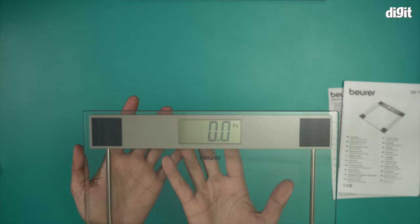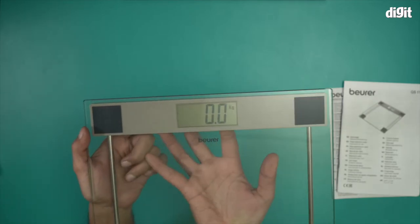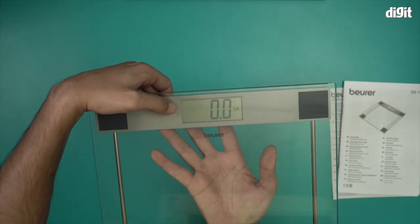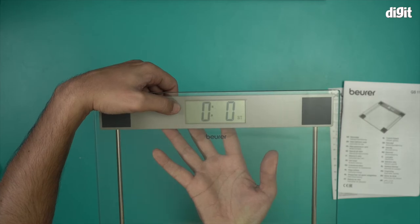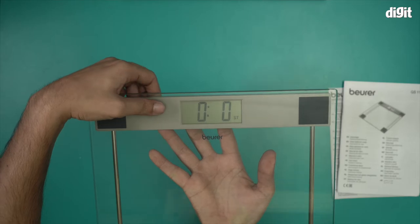It's written kilograms, pounds, and stone. When I press it, it keeps changing units. Right now it's in kg as you can see. When I press it again, it turns to pounds or lb, and pressing again turns it to stone. Pressing once more goes back to kilograms.